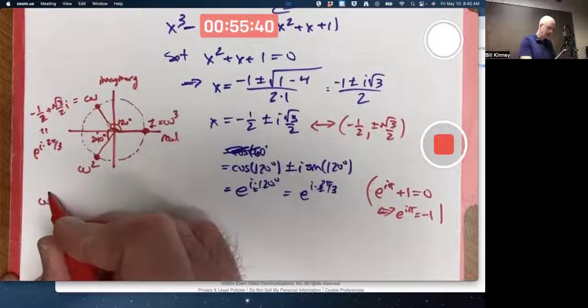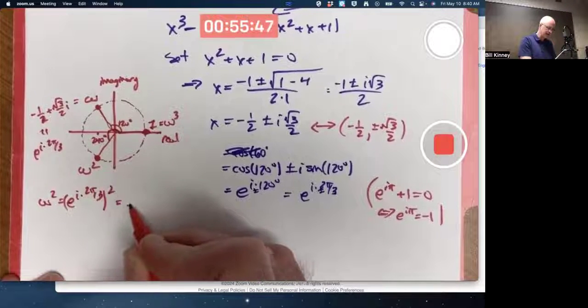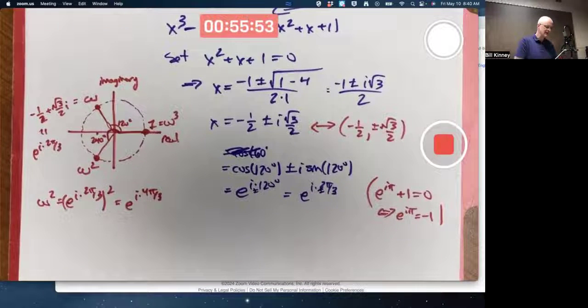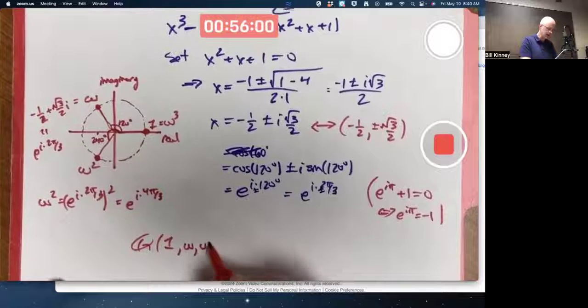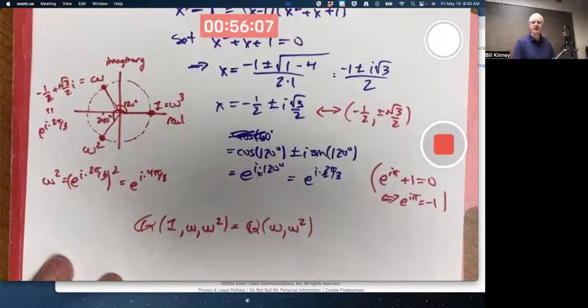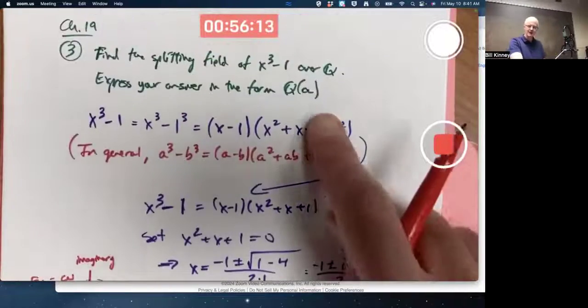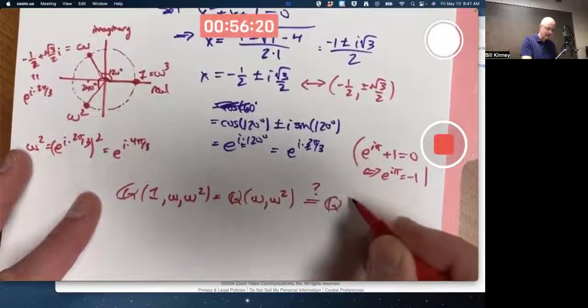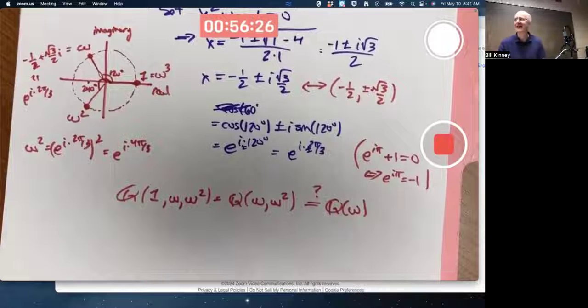And that does mean ω² is e^(i·2π/3) squared, and you would multiply the exponents and get e^(i·4π/3). Anyway, using this notation, the answer for a splitting field is Q adjoin 1 adjoin ω adjoin ω², but we don't really need to write the 1 because that's already rational. We could write it like this: Q adjoin ω and also adjoin ω². But wait a minute, that's not quite in this form yet. Q(a), Q of just one element. We might wonder, could we get away with just writing Q adjoin ω? Would ω be good enough as our a? The answer is yes.